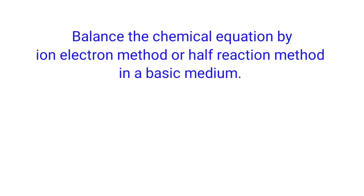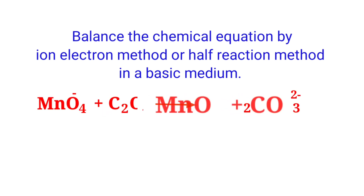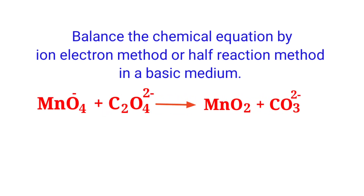Balance the chemical equation by the ion electron method, or half reaction method, in a basic medium. The reaction is: permanganate ion plus oxalate ion gives manganese dioxide plus carbonate ion.